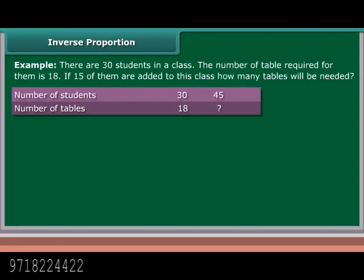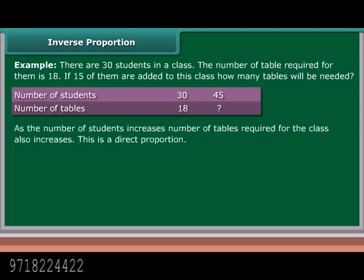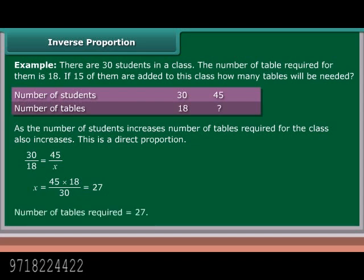Example: There are 30 students in a class and the number of tables required for them is 18. If 15 students are added to this class, how many tables will be needed? As the number of students increases, the number of tables required also increases — this is a direct proportion. 30/18 = 45/X, so X = (45 × 18)/30 = 27. Number of tables required is 27.